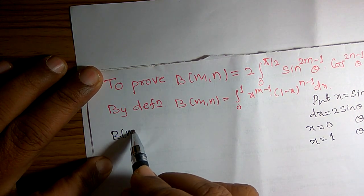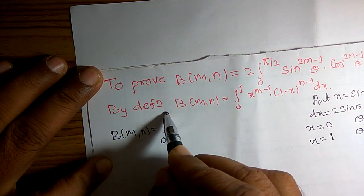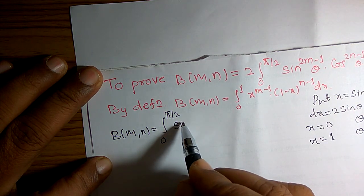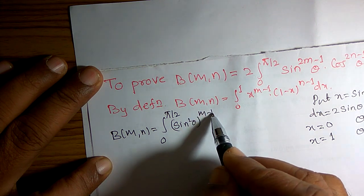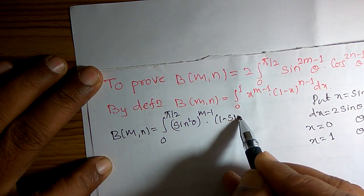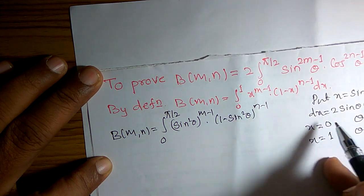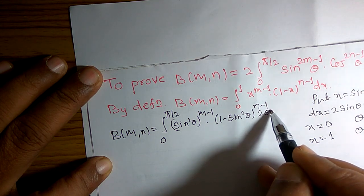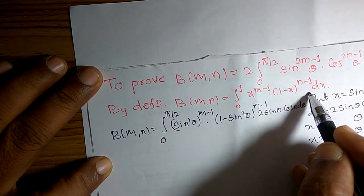Beta of m comma n is equal to integration from 0 to pi by 2. x means sin square theta. Sin square theta raised to m minus 1 into 1 minus sin square theta raised to n minus 1. dx means 2 times sin theta cos theta d theta.